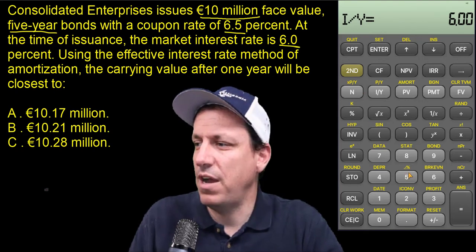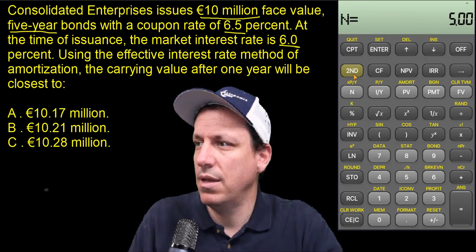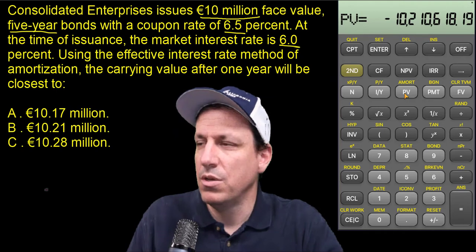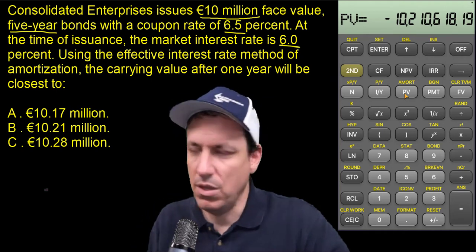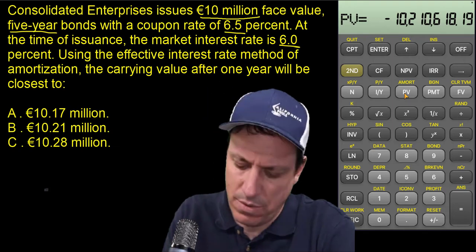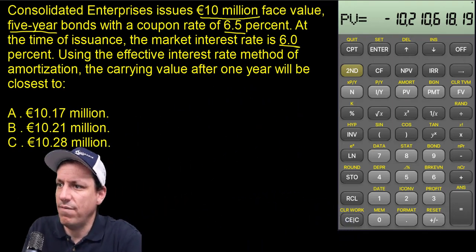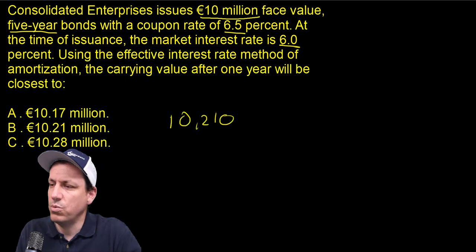These are five-year bonds, so 5 goes into N. Payments per year is 1. We're going to compute the present value of those payments. The present value comes out to $10,210,618. Let's write that down — $10,210,618.